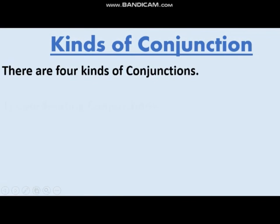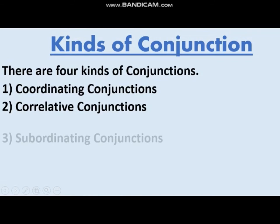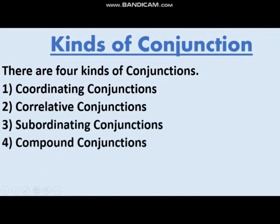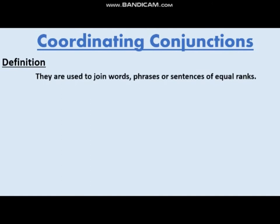First, coordinating conjunctions. A coordinating conjunction joins two words, phrases, or sentences of equal rank. Equal rank means two nouns, pronouns, verbs, or adverbs come together and are joined with the help of coordinating conjunctions. These are our coordinating conjunctions: for, and, nor, but, or, yet.